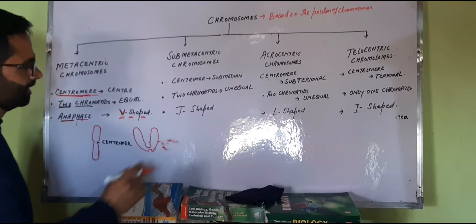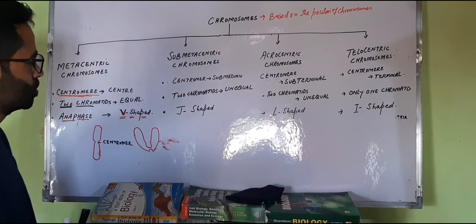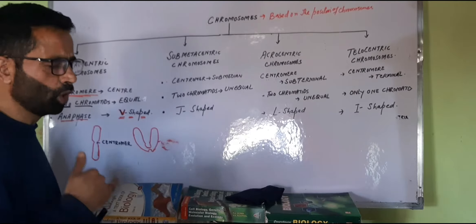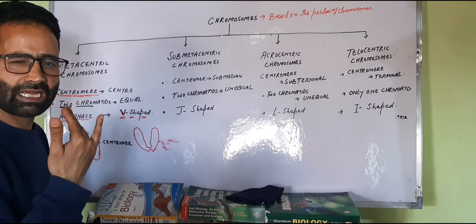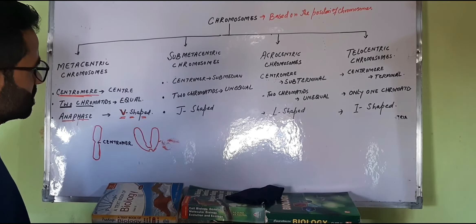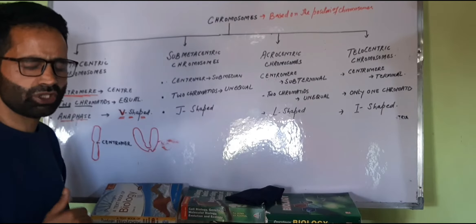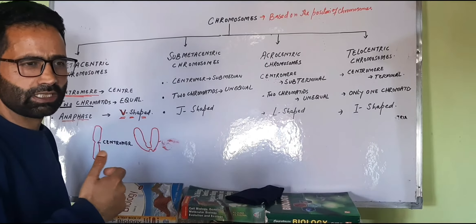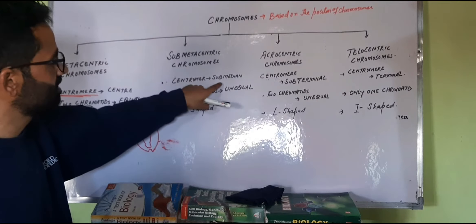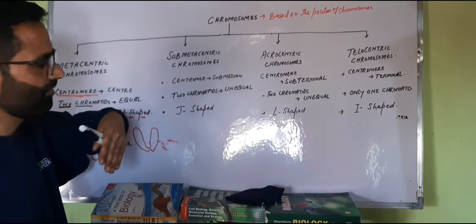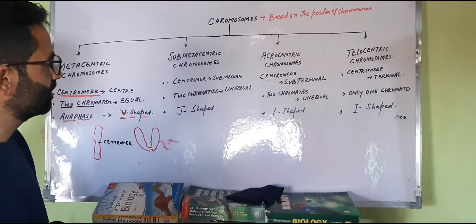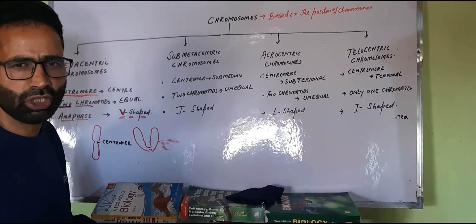The second class of chromosomes is called the sub-metacentric chromosome. Here the centromere is slightly off-center — shifted slightly from the upper side of the chromosome. This is called the sub-median position. So the centromere is at the sub-median position, just slightly away from the center.